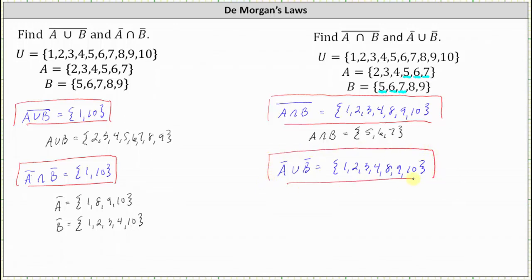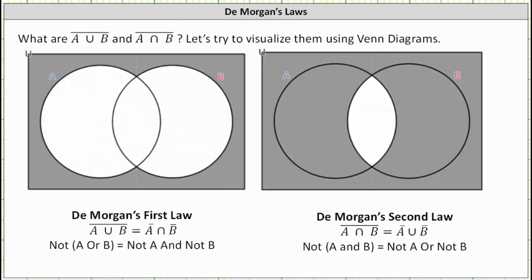These two examples are examples of De Morgan's laws. De Morgan's first law states the complement of the union of A and B is equal to A complement intersect B complement. De Morgan's second law states the complement of the intersection of A and B equals A complement union B complement. I hope you found this helpful.